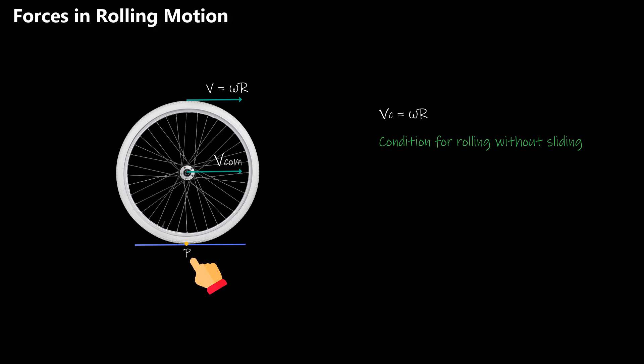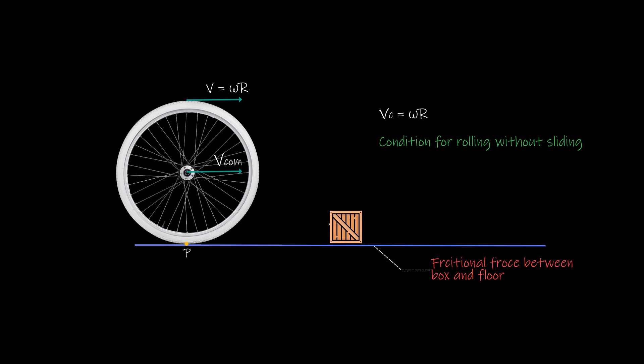Not sliding means there is no relative motion between the two, that is, the surface and the wheel, which therefore can help us conclude that there is no frictional force between them because frictional force arises only when there is relative motion between two surfaces.